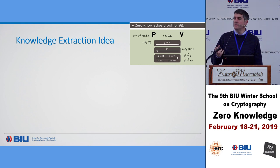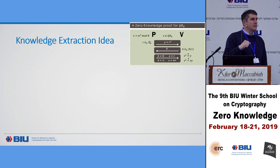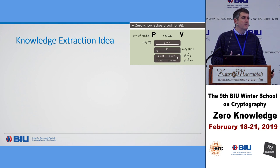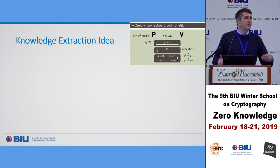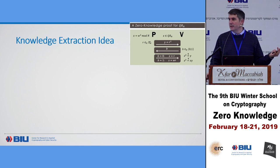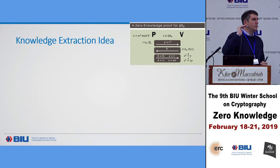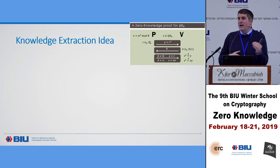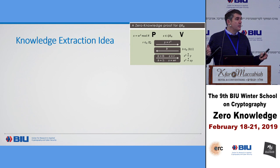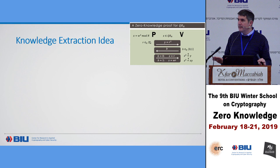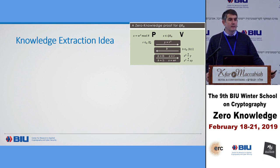Just like with simulation, knowledge extraction requires some additional power — in particular, rewinding. Why is rewinding essential? Because if it's possible to extract the witness by regular interaction, a cheating verifier could also extract the witness in a regular proof, which would violate zero knowledge. So in a regular interaction you can't extract the witness — that's guaranteed by zero knowledge. The knowledge extractor needs additional power: rewinding.